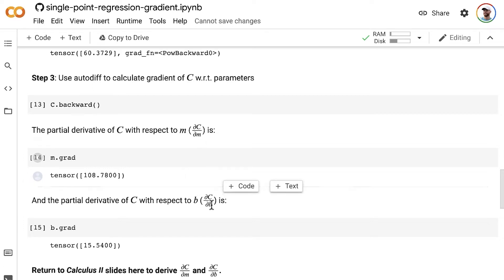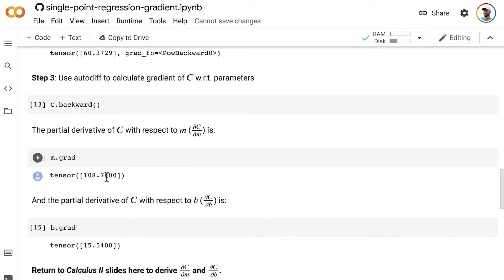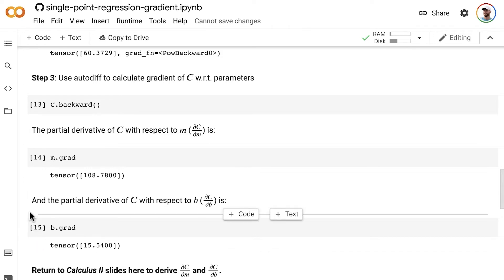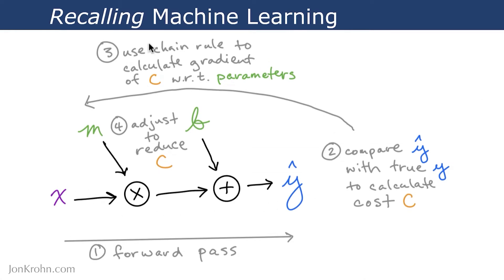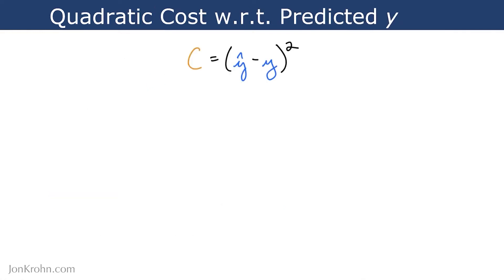So del c del m, and del c del b — we got these very specific values. So now what we're going to do is, instead of relying on automatic differentiation in this third of four steps in our machine learning process, we are going to determine by hand the partial derivatives of cost with respect to our model parameters. The cost function we were using in our single-point regression notebook was quadratic cost, which works on single points of data.